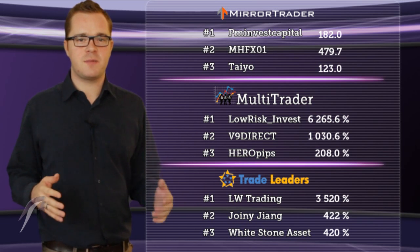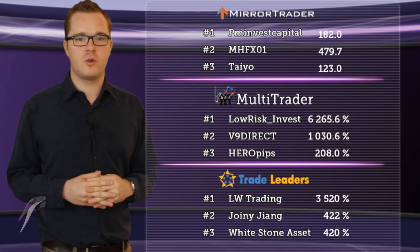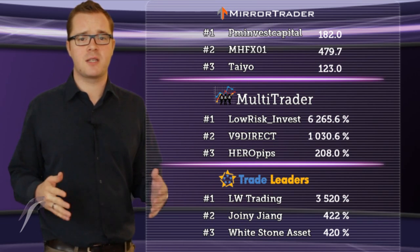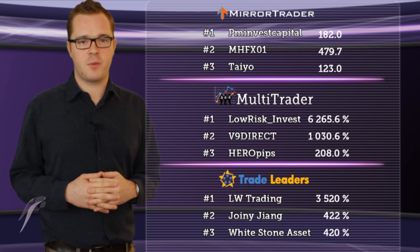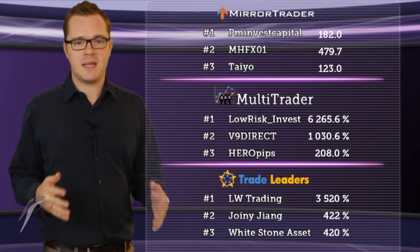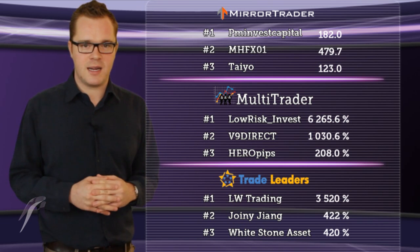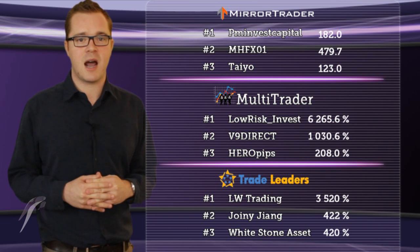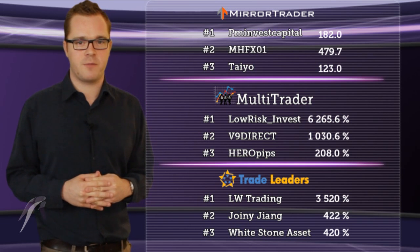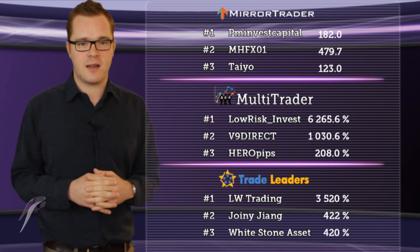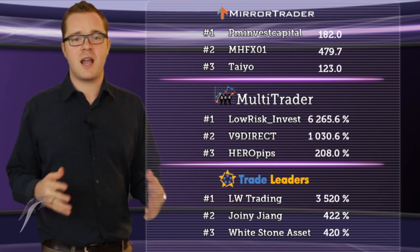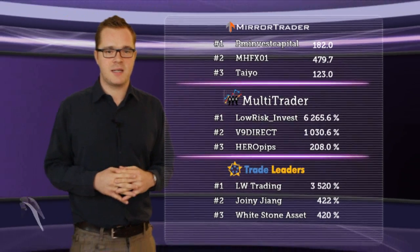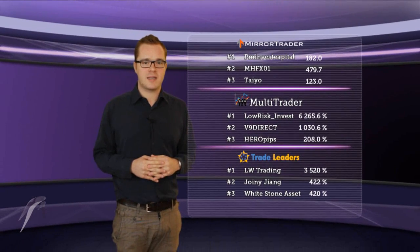The low risk investment strategy in multi trader recorded a loss of 4.8%. On the upside, V9 Direct rose 5.5%. The biggest gain was in trade leaders, where LW Trading added 127% to a total of 3,647%. Joiny Jang rose 6% and Whitestone Asset rose 5%.